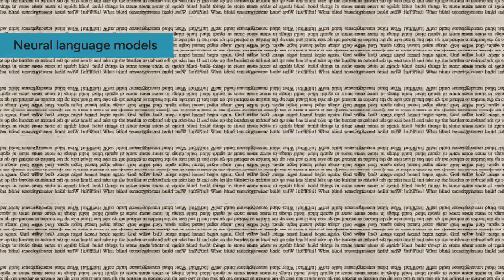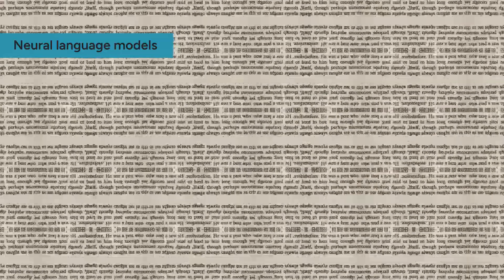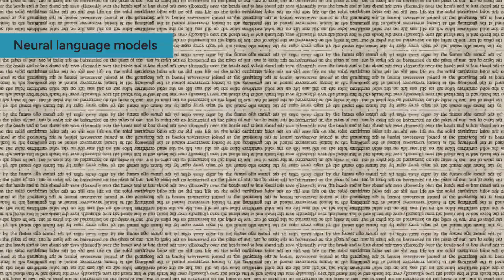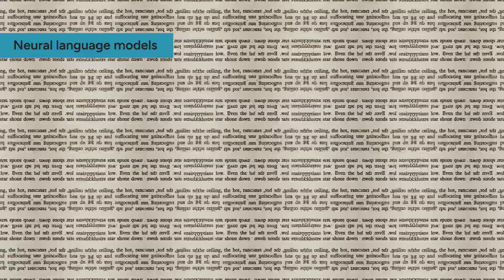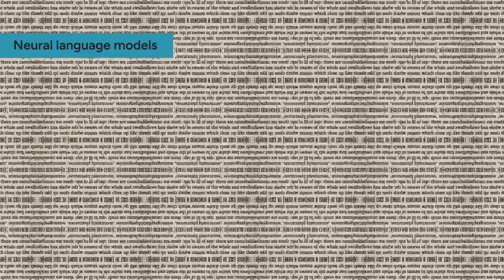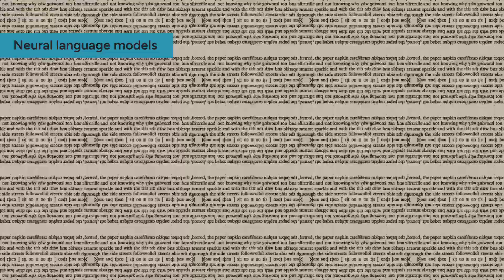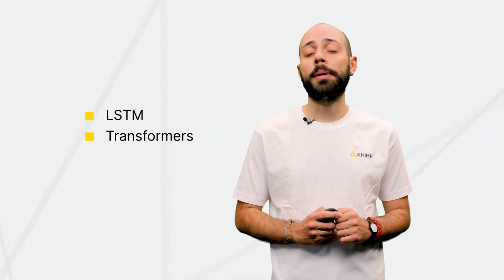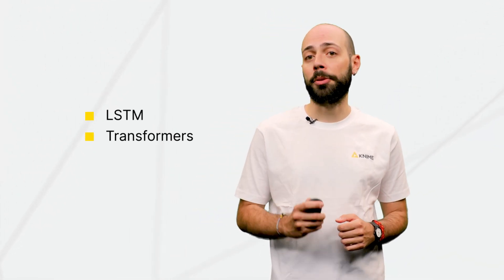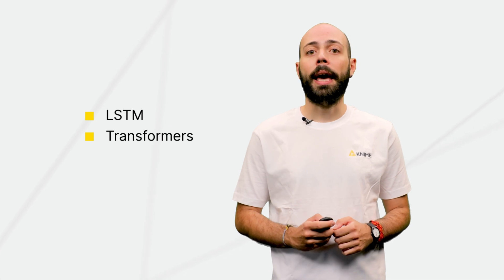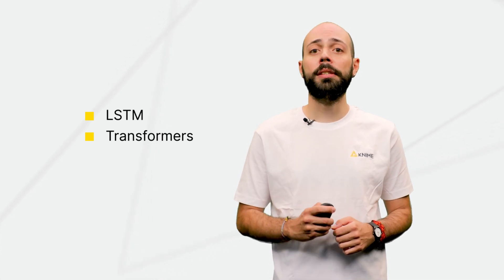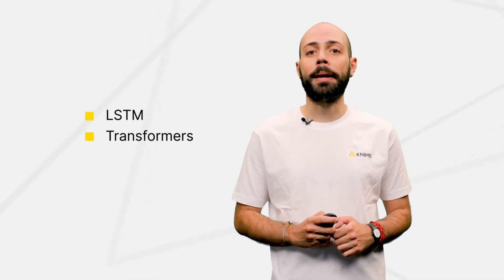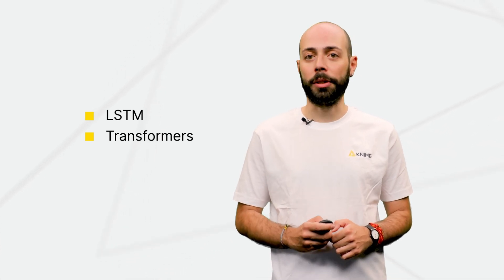They can handle large vocabularies and deal with rare or unknown words by using word embeddings to make their predictions. Popular deep learning architectures such as LSTM and transformers have proven superior in capturing context, handling complex language structures, and longer dependencies between words.